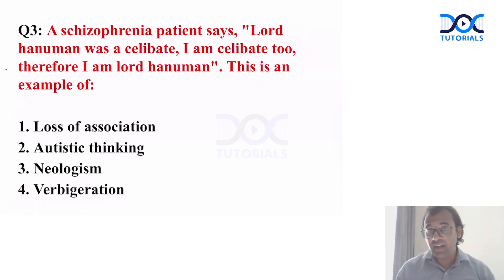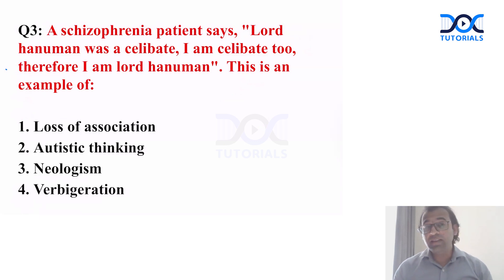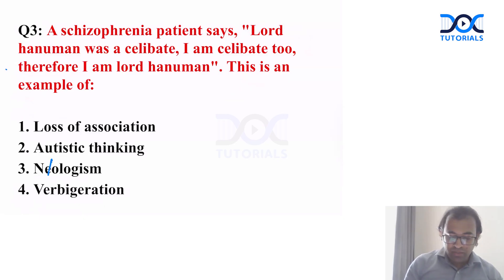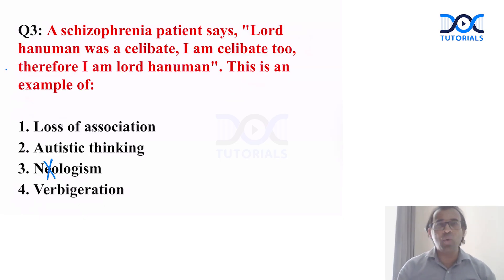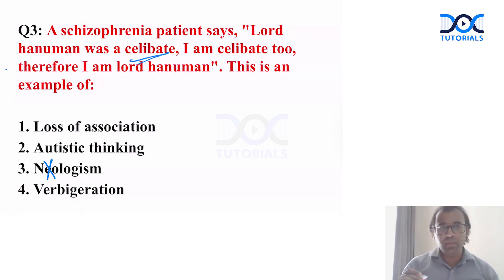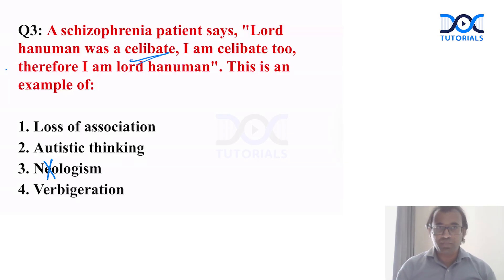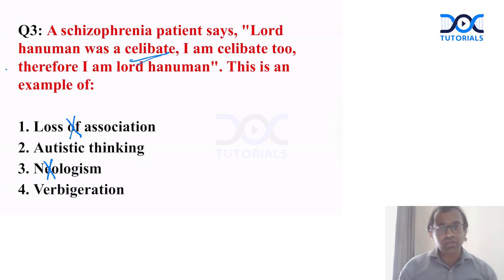Next question: a schizophrenia patient says, 'Lord Hanuman was a celibate, I am a celibate too, therefore I am Lord Hanuman.' This is an example of which thought disorder? First, you can easily rule out neologism — neologism means to coin a new word. Celibate is not a new word; celibate means a person who refrains from sexual intercourse for religious purpose. Option one, loosening of association, is also a type of formal thought disorder involving loss of connection between thoughts.